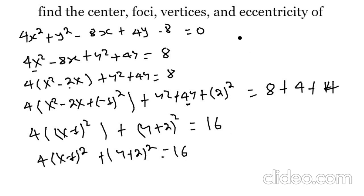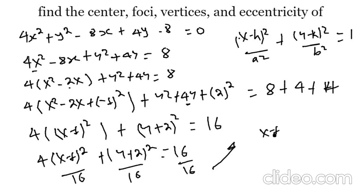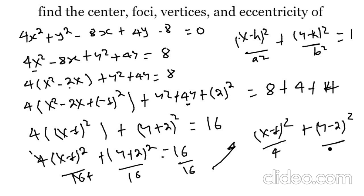Converting to standard formula: (x minus h)² over a² plus (y minus k)² over b² equals 1. Dividing everything by 16: (x minus 1)² over 4 plus (y plus 2)² over 16 equals 1. So a squared is 16 and b squared is 4. Since a squared is always the highest denominator, the graph has a vertical axis.